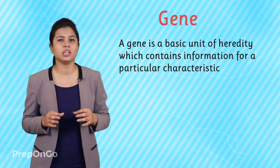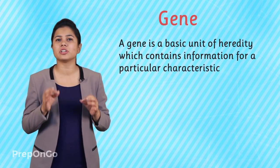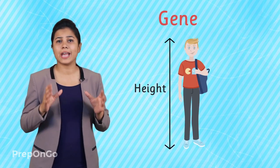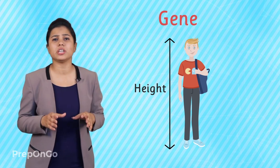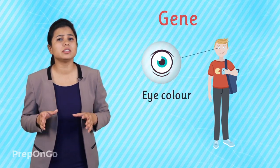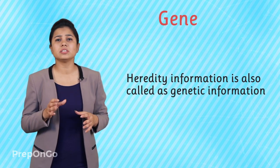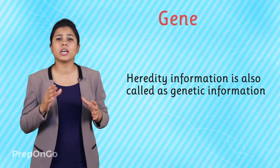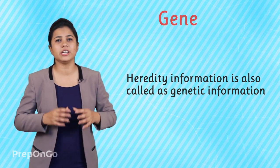Now, what is it that a cell has which contains the information? The answer is the gene. A gene is a basic unit of heredity which contains information for a particular characteristic. For example, if we talk about height as a characteristic, then there will be a particular gene responsible for it. Or if we take some other characteristic like the color of the eyes, then there will be another gene responsible for it. Genes contain hereditary information, which can also sometimes be called genetic information.